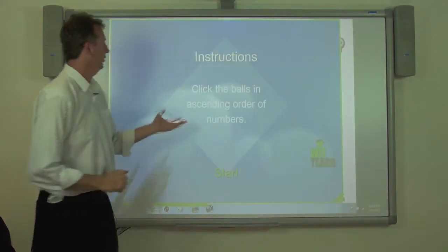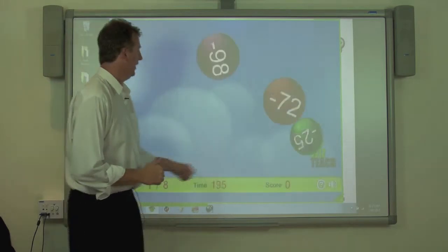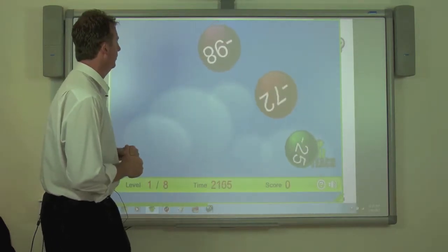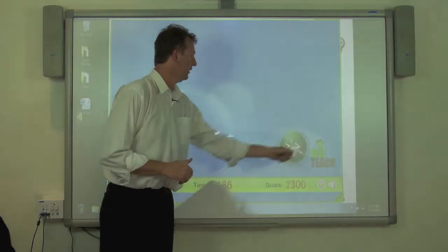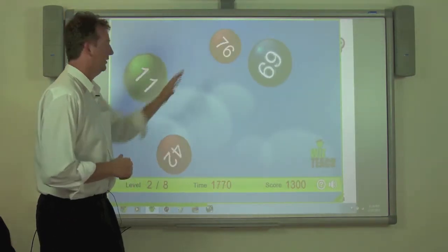All right, so it'll give you an explanation at the start, and you just have to click the one which is the highest number, the lowest number, sorry, and just go through.